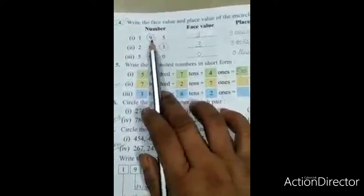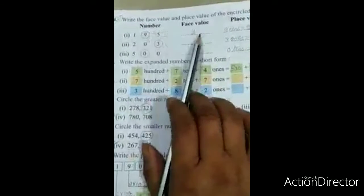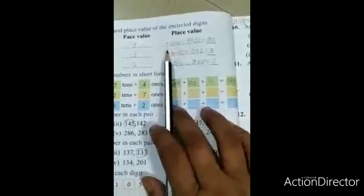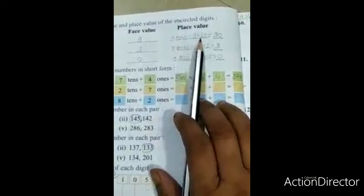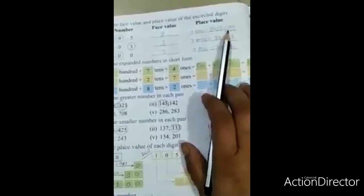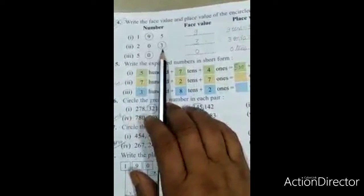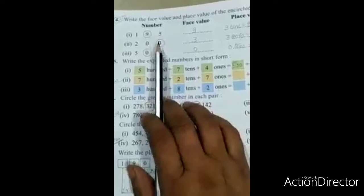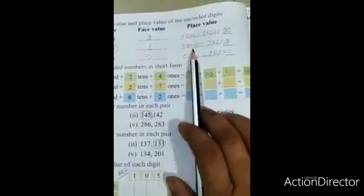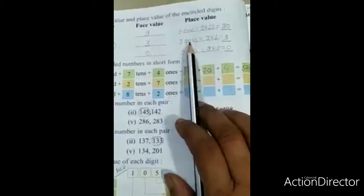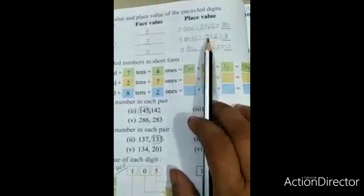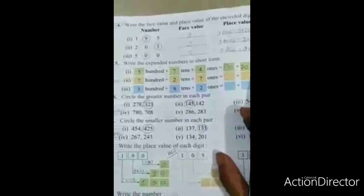Number one: 195. The nine in the tens place is circled. What is its face value? As it is: nine. Place value is nine tens, that means nine multiplied by ten. Nine tens are ninety. The place value of nine is ninety. Next is 203. Three is circled at the ones place. Face value is three, and place value is three ones, that means three multiplied by one. Three ones are three, so the place value of three at the ones place is three.